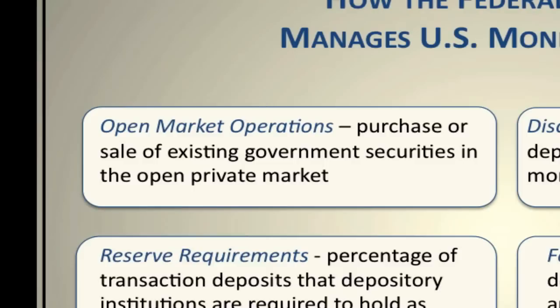Quantitative easing, or open market operations, is simply the purchase or sale of existing government securities in an open private market. The Federal Reserve essentially states it will purchase a certain dollar amount of a government security — usually U.S. Treasury bonds or notes, although recently they've been purchasing mortgage-backed securities as a way of propping up the housing market and keeping interest rates low. They orchestrate the purchase by wiring the funds, which get deposited into a bank, injecting money into the money supply that wasn't already available, thus expanding the amount of money in circulation.